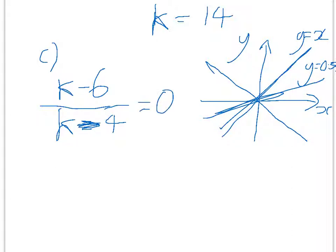Yet again, we're going to multiply through by this k minus 4. Well, 0 times anything becomes 0. So, all you're left with is k minus 6 equals 0. So, k is equal to 6.